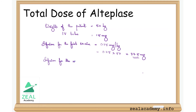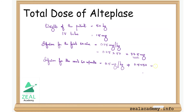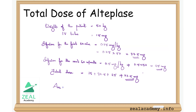The infusion for the next 60 minutes is 0.5 mg per kg, which equals 0.5 × 50 = 25 mg. The total dose is therefore 15 + 37.5 + 25 = 77.5 mg. The correct answer is Option D.